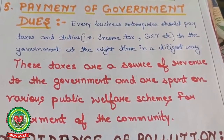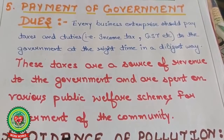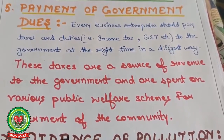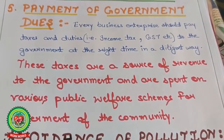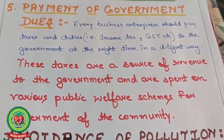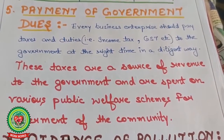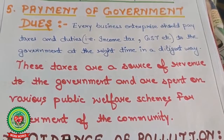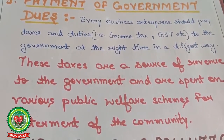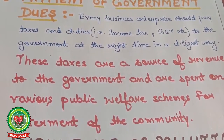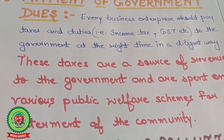These taxes are a source of revenue to the government and are spent on various public welfare schemes for the betterment of the community. The government collects taxes from corporate sectors and individuals and then invests the money in government hospitals, schools, colleges, and infrastructure like highways and roads. It is the responsibility of the business to show an accurate picture of income to the income tax department and to pay tax on time.